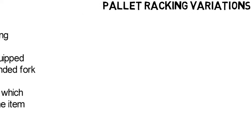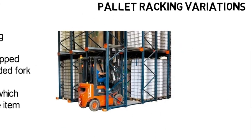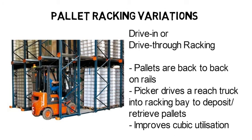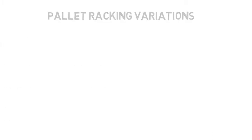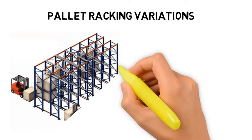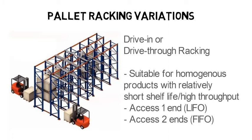For drive-in or drive-thru racking, pallets are placed back-to-back on rails. A picker is able to drive a reach truck into the racking bay to deposit or retrieve pallets. This system also provides an improved cubic utilization. Drive-in or drive-thru racking is suitable for homogeneous products with relatively short shelf life or high throughput. Depending on whether the racking is accessed from one or two ends, it can be used for products handled on a LIFO — last-in-first-out — or FIFO — first-in-first-out — basis.